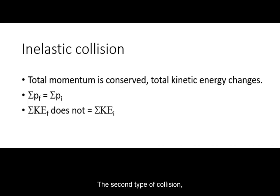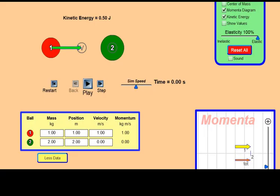The second type of collision, the one more common, is inelastic collision. Total momentum is conserved, but the total kinetic energy changes. The energy lost might be due to inelastic behavior and goes to heat, sound, or other types of energy. We can simulate this by setting elasticity below 100%.